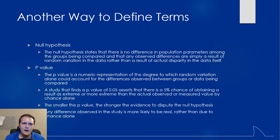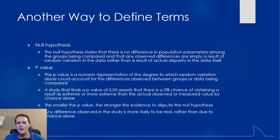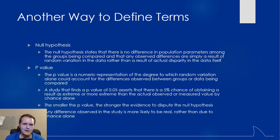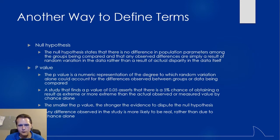The null hypothesis says there's no difference between the population parameters we're looking at between groups. The p-value is basically asking: what are the chances, due to random chance alone, that these are the results we got, or something even more extreme? Saying p equals 0.05 means there's a 5% chance it's just due to chance alone. The smaller the p-value, the stronger the evidence that the null hypothesis is not true. When you find a p-value less than 0.05, you can reject that null hypothesis with some degree of confidence, saying there is a true difference between these groups because the results are very unlikely to be due to chance alone.